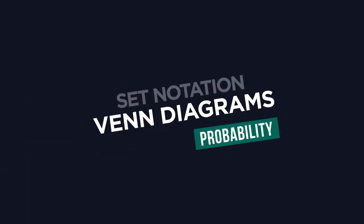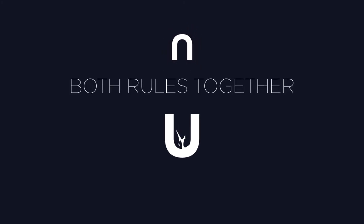So there you have a guide to finding probabilities using set notation and Venn diagrams. Be careful to remember that with an intersection, you have to follow both rules together, but with a union, only one rule must apply at a time.